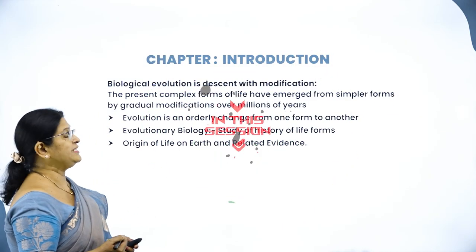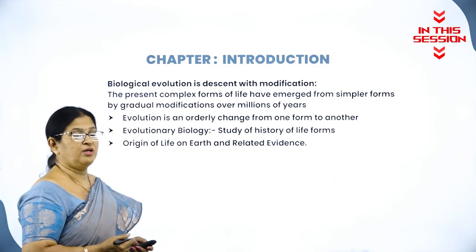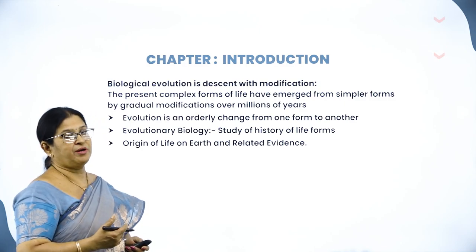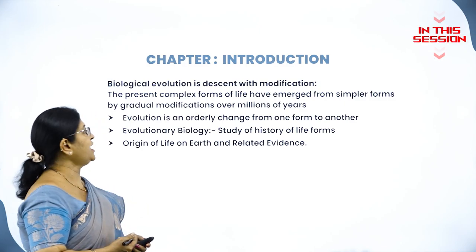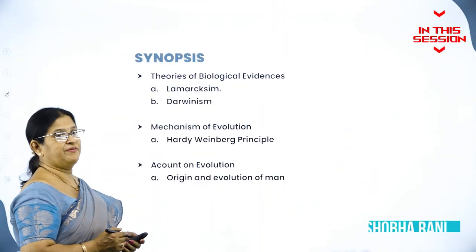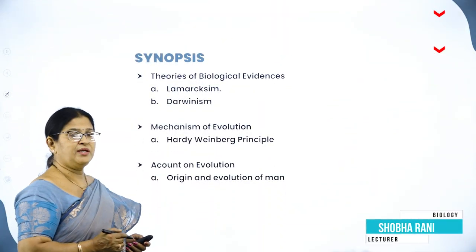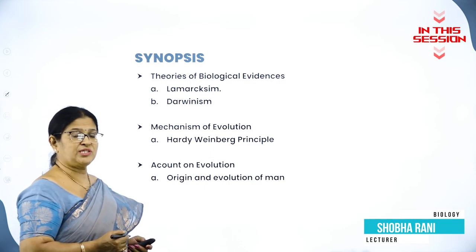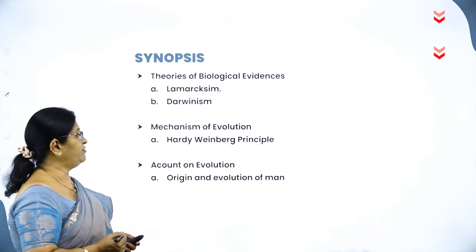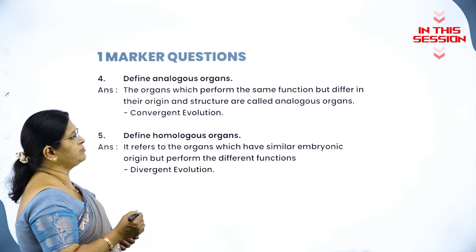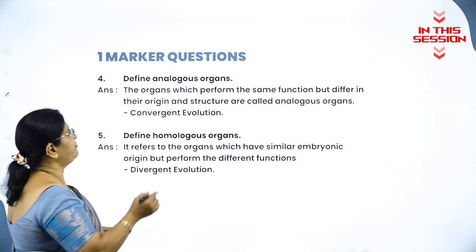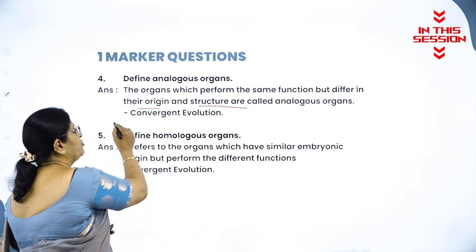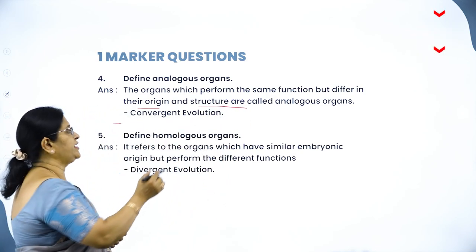Biological evolution is descent with modification, or the gradual changes that take place in an organism from time to time, is called evolution. The organs which perform the same function but differ in their origin and structure are called analogous organs, and they lead to convergent evolution.